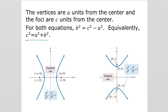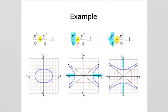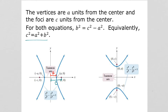c is the distance from the center to the focus. a is the distance from the center to one of the vertices. b is created by making a box with a and b, and that box creates diagonal lines — the asymptotes — that help guide the hyperbola. You'll see that as we graph in a minute.